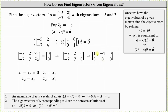The first row indicates that x1 minus x2 equals zero, and because x2 is a free variable we have x2 equals x2. Solving the first equation for x1 we have x1 equals x2. We can parameterize the solution by letting x2 equal t.